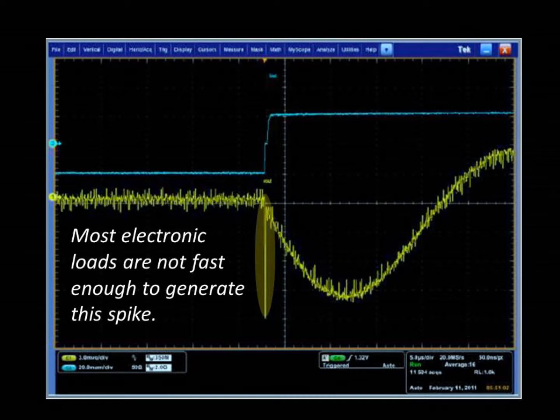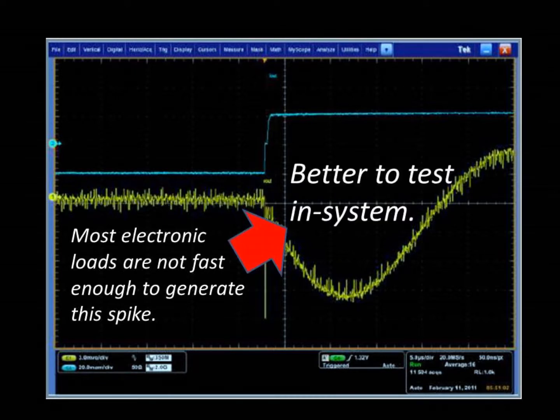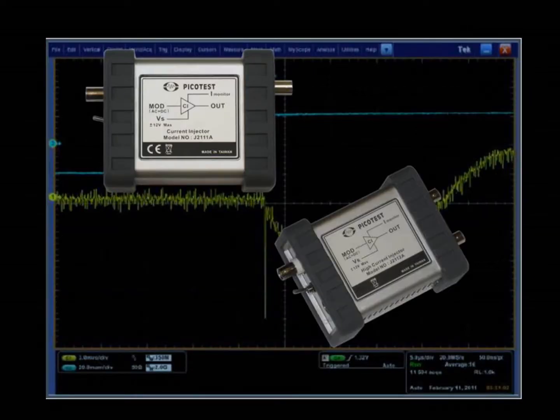This is one reason that we prefer to troubleshoot in-system using the system as the load. If and when we need to inject the stimulus, high-speed current injectors such as the J2111 or J2112 are fast enough to reveal most of these common issues.